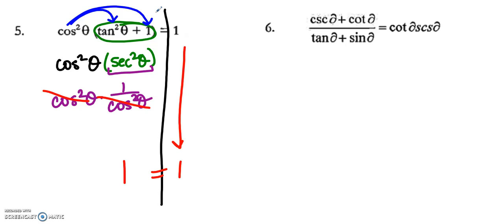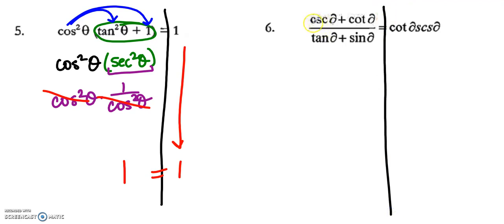Something to note: you can't really mess these up as long as you're plugging in legal substitutions — true mathematical facts. As soon as you start plugging in things that aren't true, we might have problems. Using your identity sheet, you should be okay. When all else fails, it's helpful to change everything to sines and cosines. So right now I've got cosecant, cotangent, tangent, and sine all together, and the common thread is to put them all in terms of sine and cosine.